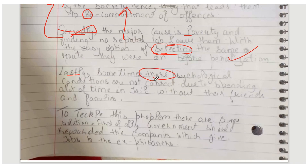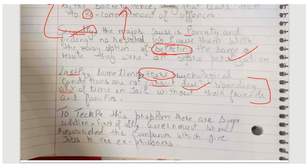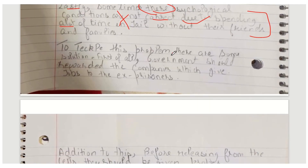Next, sometimes there are psychological conditions — note the spelling of 'psychological' is not correct. Due to spending a lot of time in jail without their friends and family, they are psychologically unwell. The 'due to' structure is fine, but you haven't explained what happens as a result — if they spend that time, what happens exactly? This point is incomplete and not properly justified.